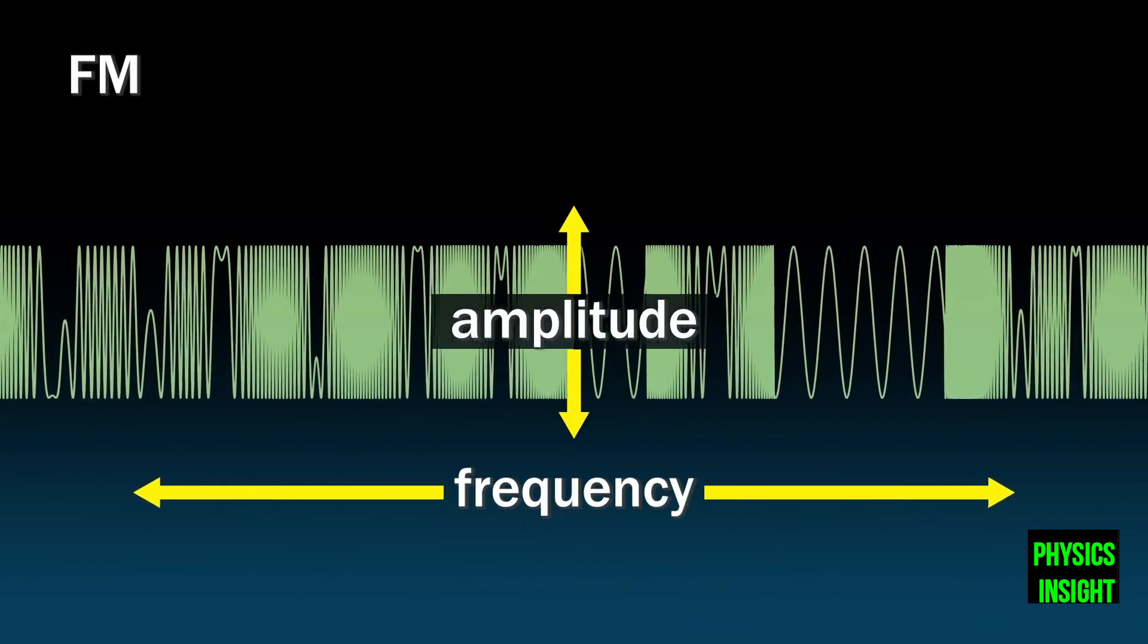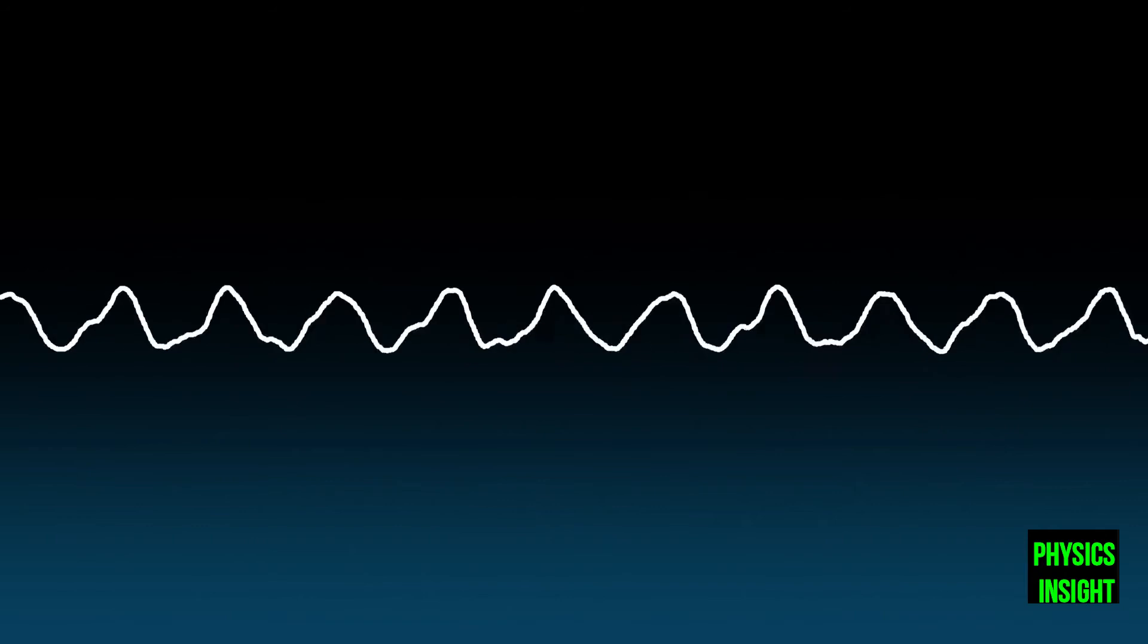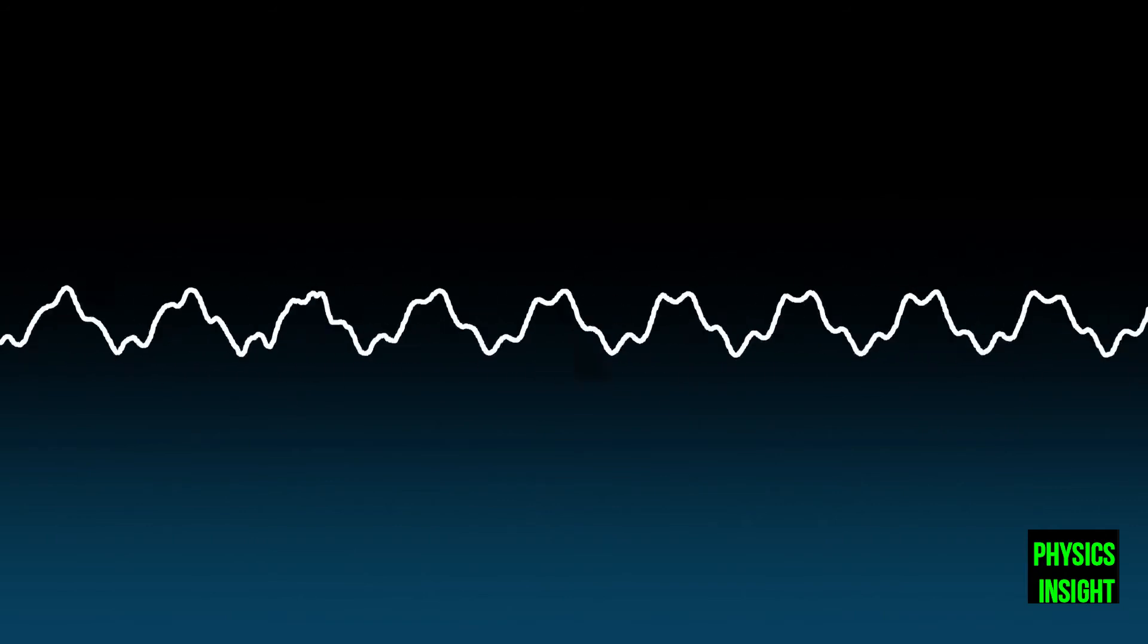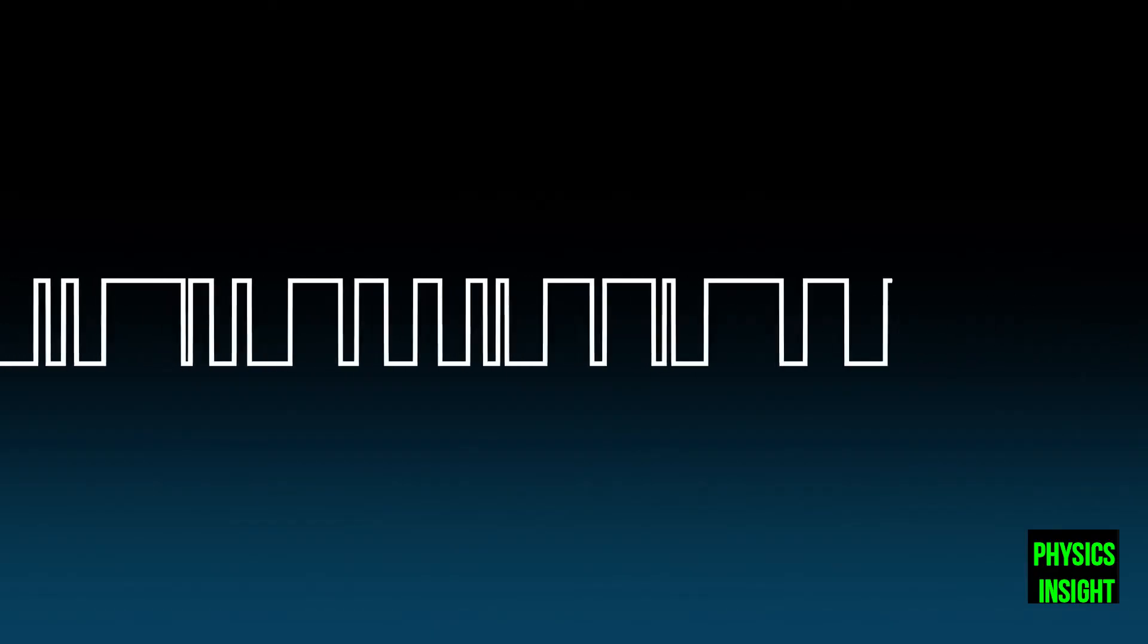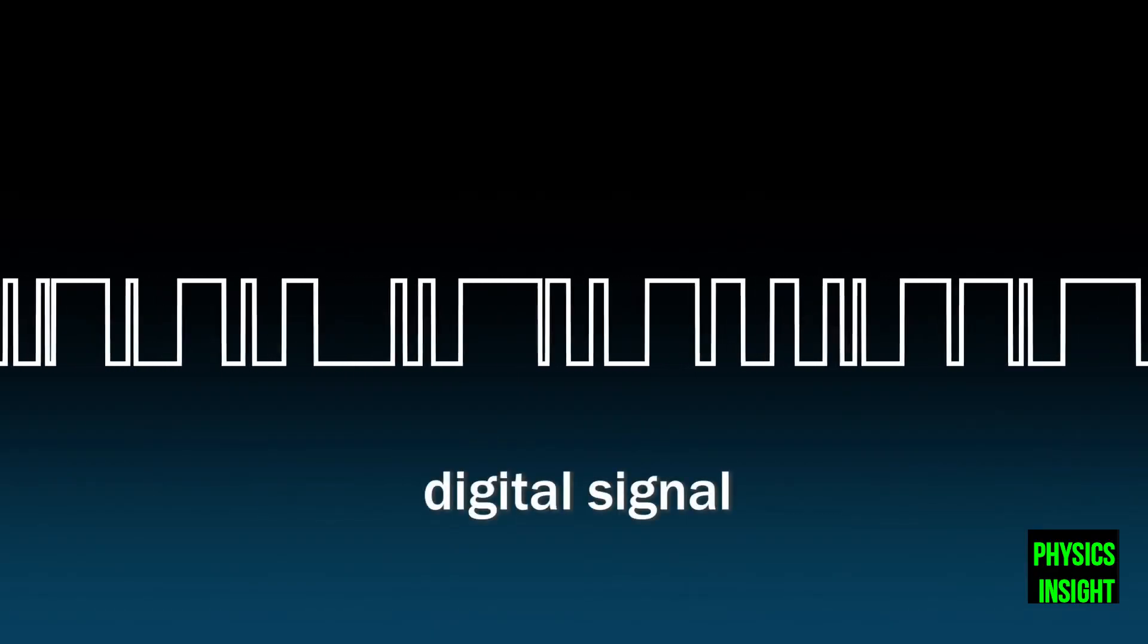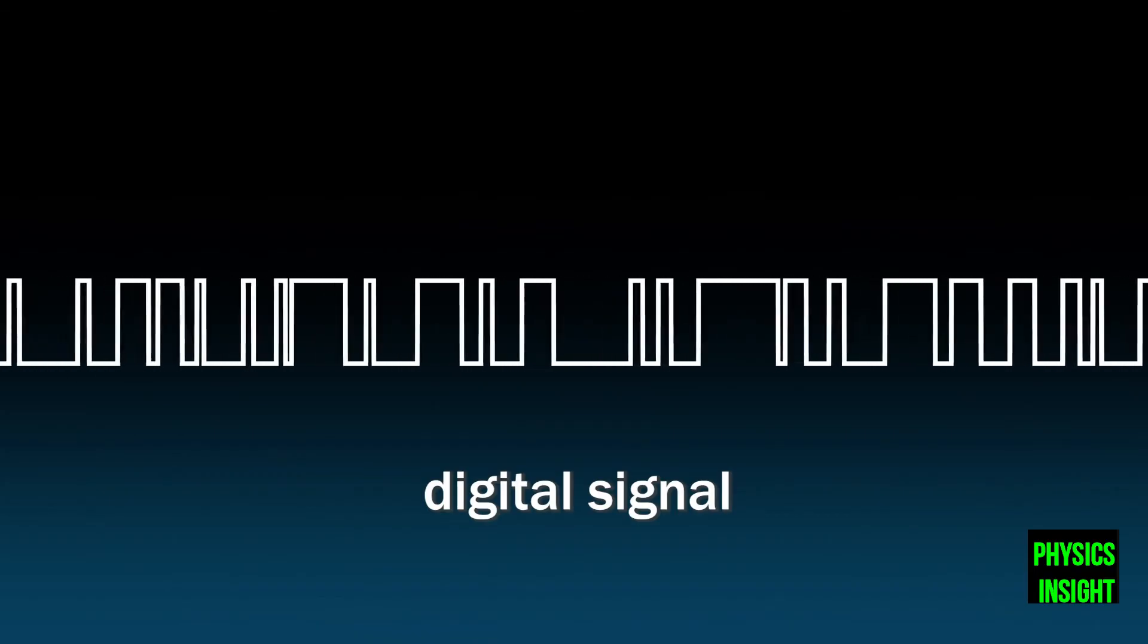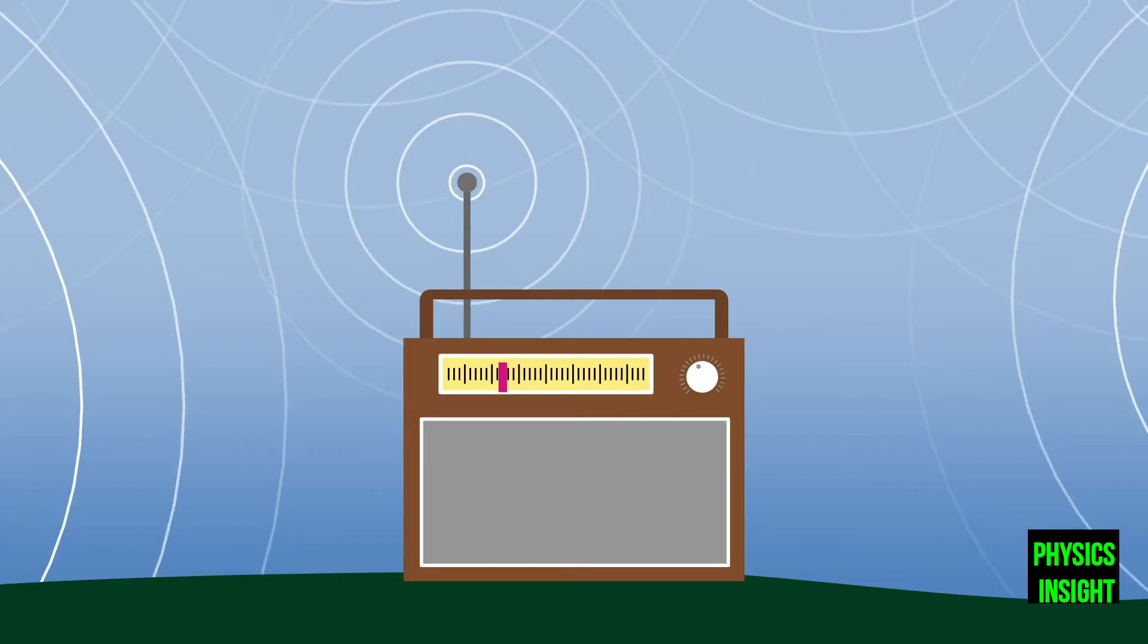AM and FM radio carry sound waves, a type of analog signal, to your receiver. Modern digital radio carries information as a digital signal, coded in the form of numbers. Millions of radio waves carrying sound wave signals and digital signals reach your receiver every second.